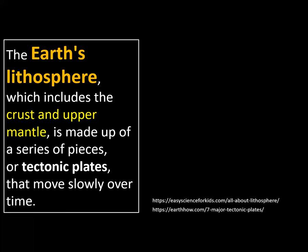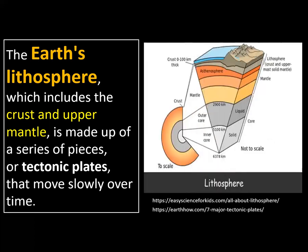Earth's lithosphere, which includes the crust and the upper mantle, is made up of a series of tectonic plates. Each tectonic plate is composed of the crust and the upper mantle. The crust and the upper part of the mantle make up the lithosphere, which we consider the lithospheric plate or tectonic plate. This lithospheric plate floats on top of the asthenosphere, or generally what we call the mantle.